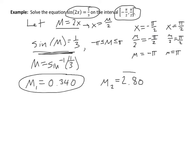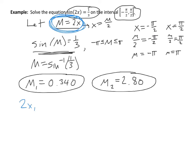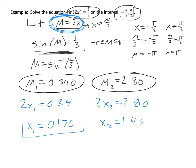These are m values, not the actual answers. Since m equals 2x, I have 2x₁ = 0.340 and 2x₂ = 2.80. Dividing both by 2 gives the actual solutions: x₁ ≈ 0.170 and x₂ ≈ 1.40. Then I'll summarize the method before doing one final example.